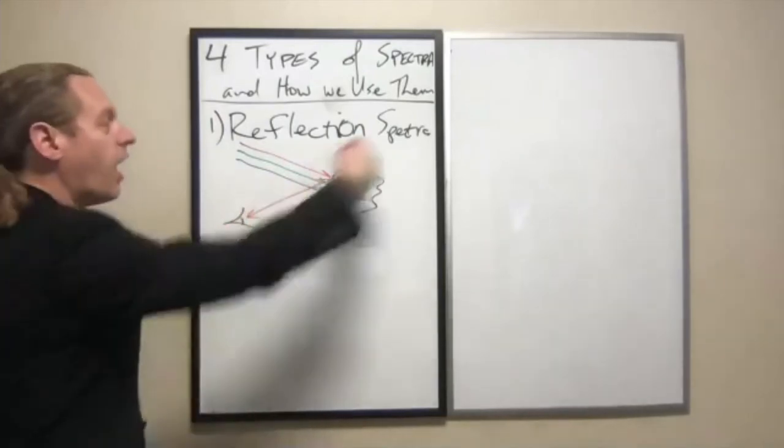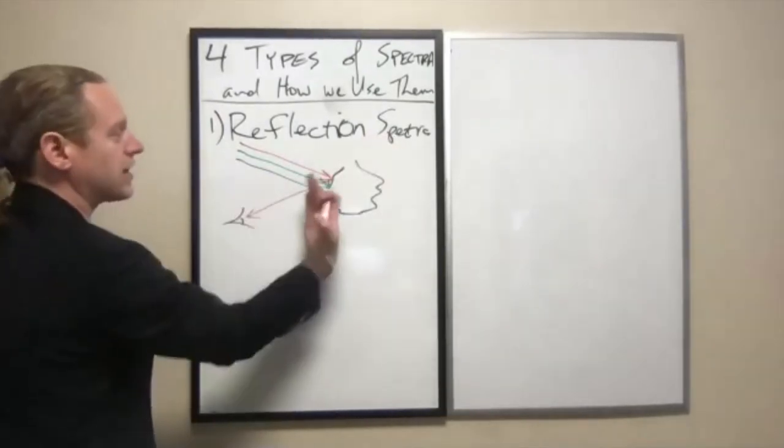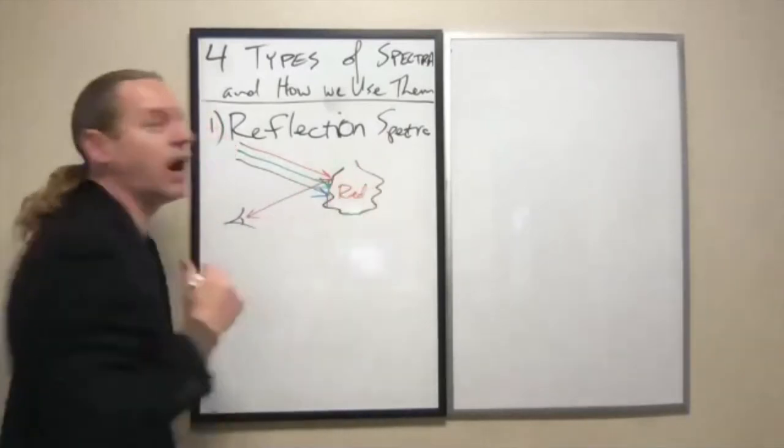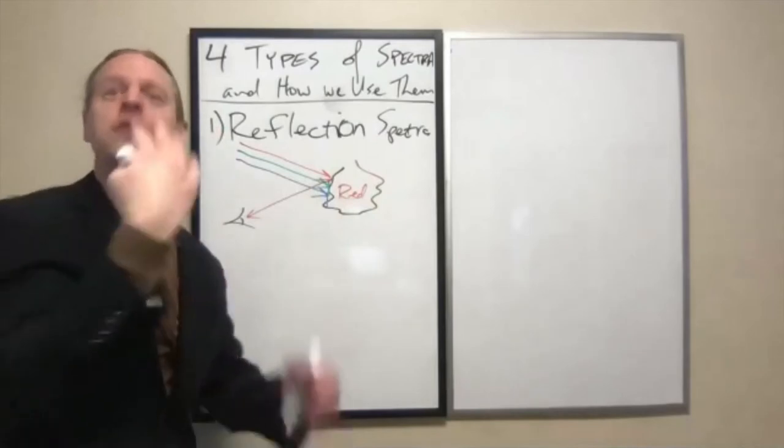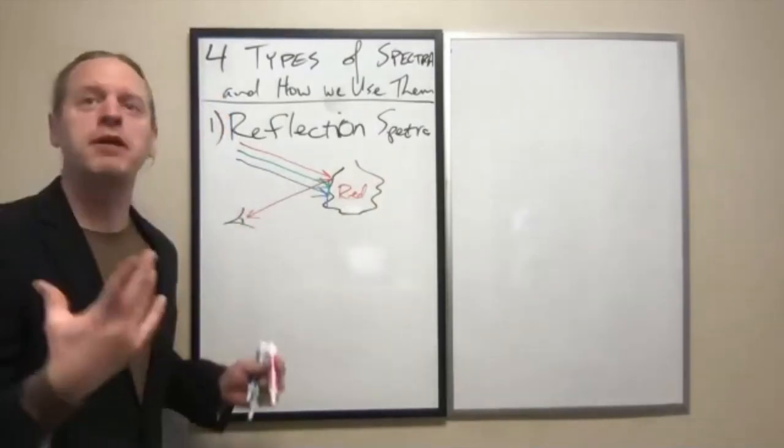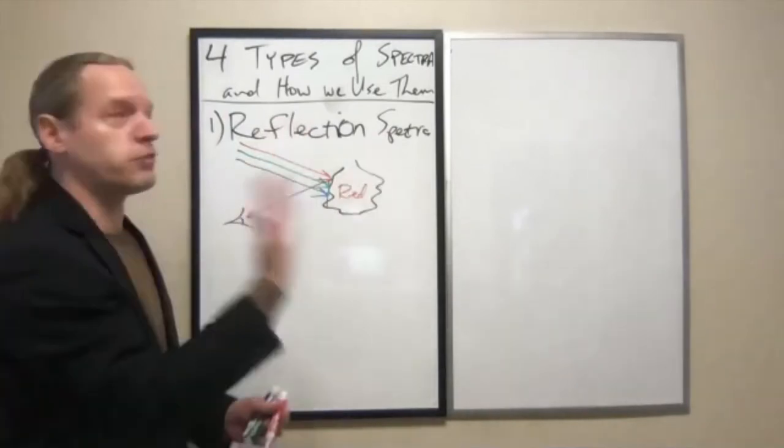So you, as viewing only the light that reflects off this object, will see this as red. Now, it does not mean this object is relatively cool compared to blue or green objects. It just simply means that this thing reflects red light, and that's what you see it as.